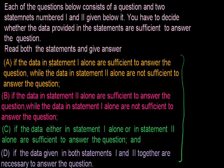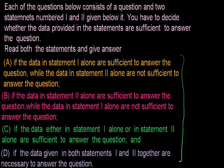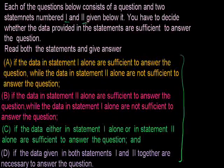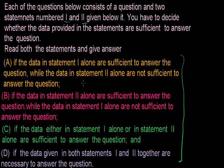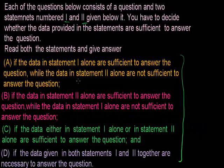The first option says: if data in statement one alone are sufficient to answer the question while data in statement two alone are not sufficient. Meaning, if using statement one we arrive at the answer, and using statement two we are not able to arrive at the answer, then we will pick option A. That means statement one alone is sufficient to answer while with statement two we cannot arrive at the answer.